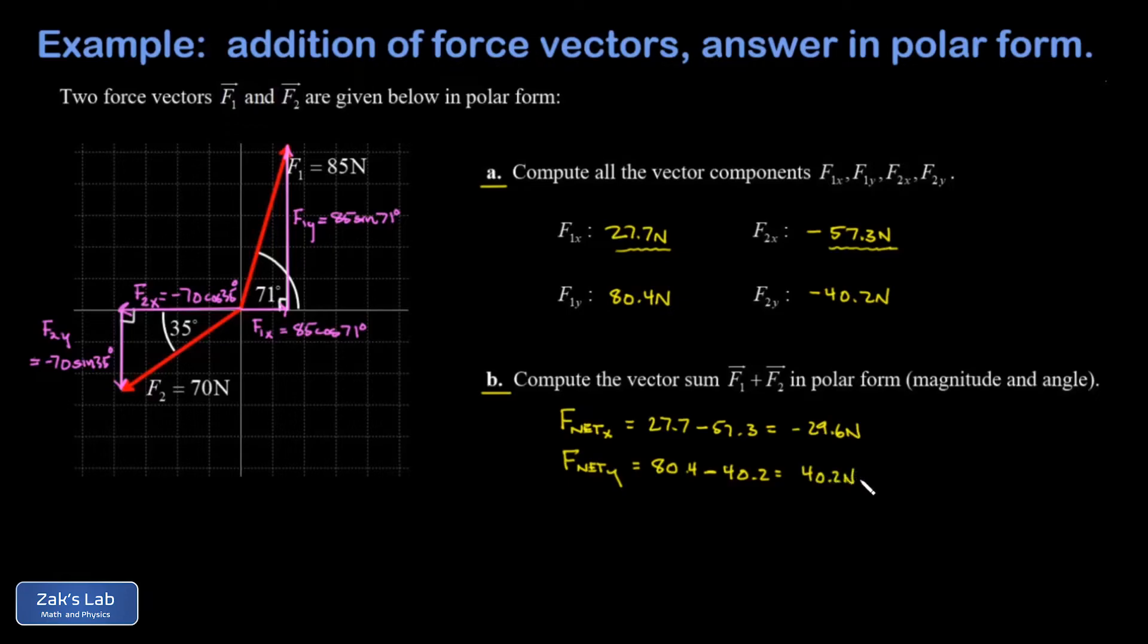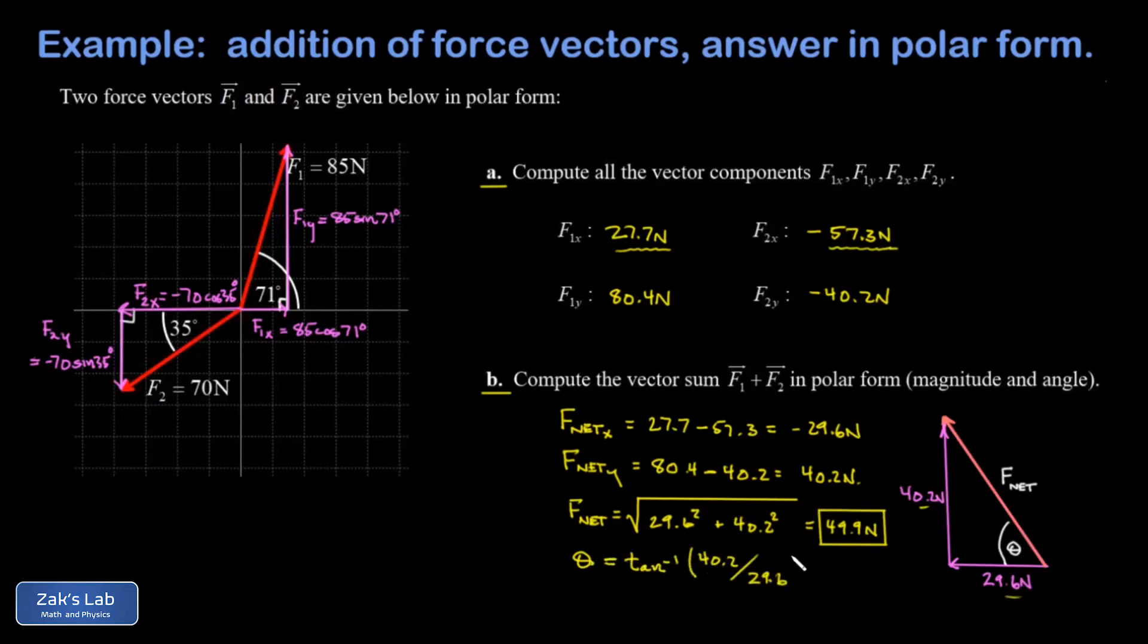Now that we have the total x component and the total y component we can draw a triangle to visualize this. And in that triangle I've got my 29.6 newton leftward pointing component, I have my 40.2 newton upward pointing component, and what we're after here is the angle of that resultant vector relative to the x-axis and also the magnitude of it which I'll call F_net. So to get F_net we plug into the Pythagorean theorem. The length of the hypotenuse is the square root of the sum of the squares of the legs, and this gives me 49.9 newtons. And then the angle theta, that's the angle whose tangent is 40.2 over 29.6, in other words the inverse tangent 40.2 over 29.6, and this gives me 53.6 degrees.